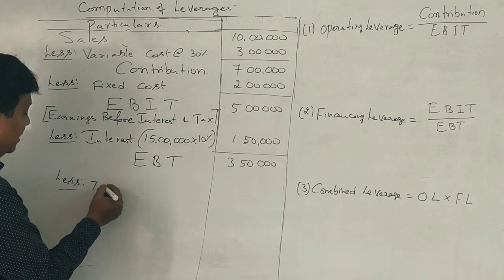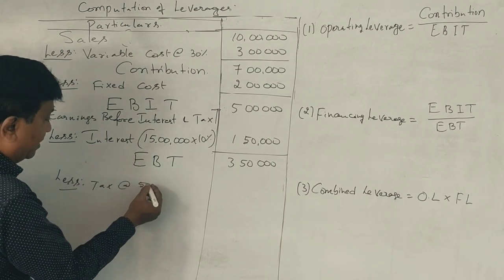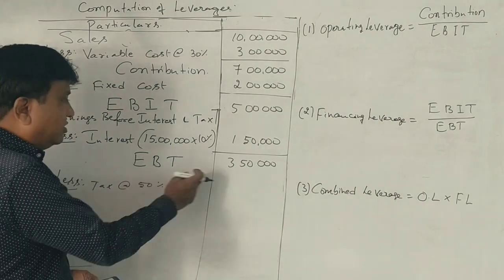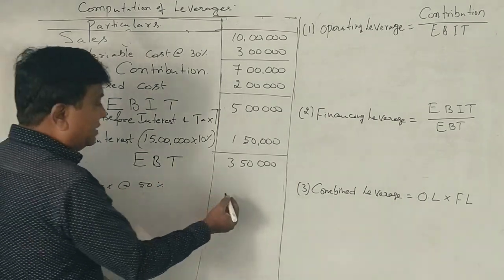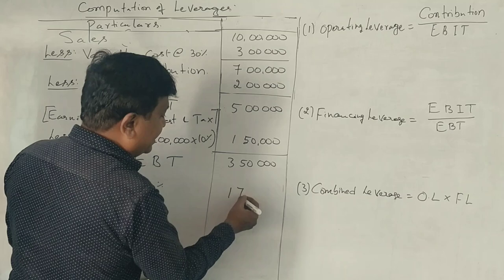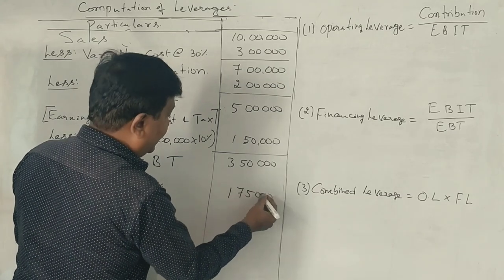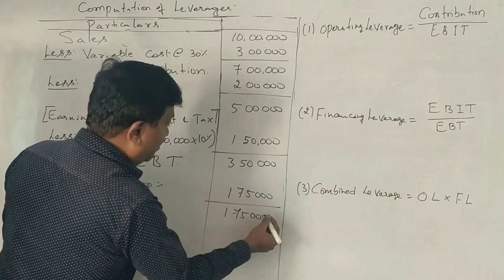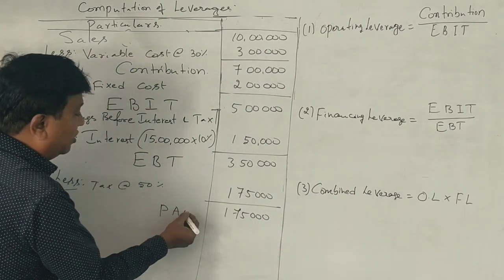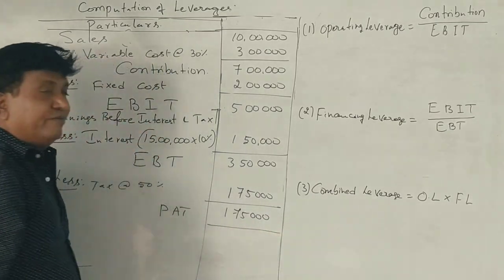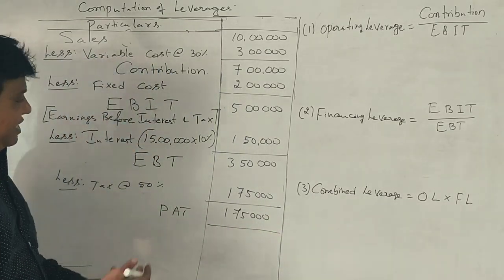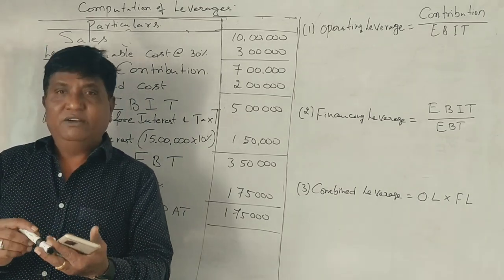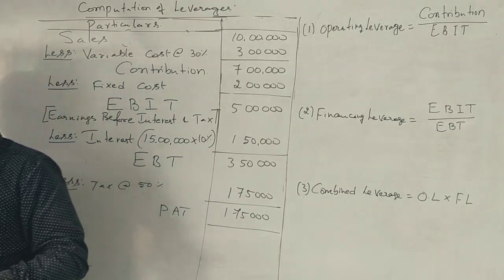Tax is 50% on EBT. So 50% on 3 lakh 50,000 is 1 lakh 75,000. The remaining 1 lakh 75,000 is PAT — Profit After Tax. We have nothing to do with the PAT, but since it was given, we calculate it anyway.